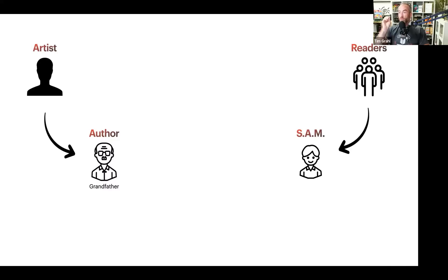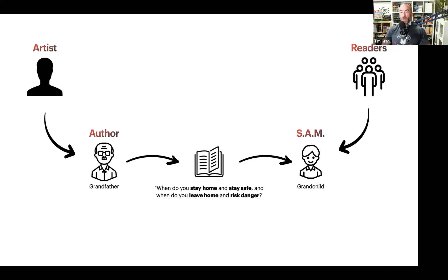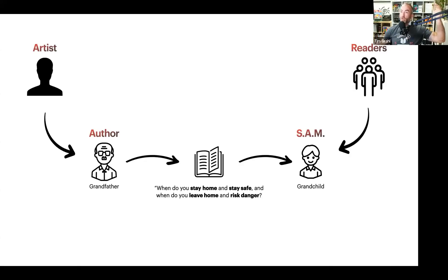So when we're telling a story inside StoryGrid, we have one very specific person called the author telling a story to one very specific person called Sam. In my example, we're going to say the author is a grandfather telling a story to his grandchild. Why? He wants to entertain the child, but he also wants to help his grandchild know how to make a good decision. So he's going to tell a story that asks: when do you stay home and stay safe, and when do you leave home and risk danger? For a child that's growing up, this is a really important question — there are times you need to stay safe and times where you need to set out on adventure.